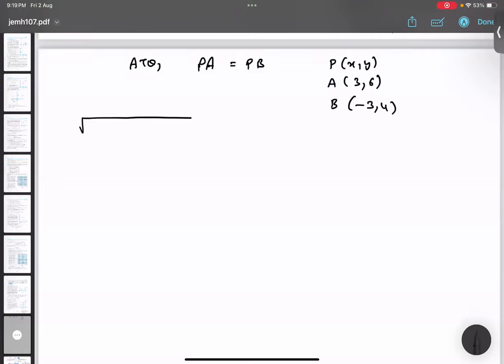So PA distance, 3 minus x whole square, 6 minus y whole square. That is PA distance and PB distance, minus 3 minus x whole square, plus 4 minus y whole square.